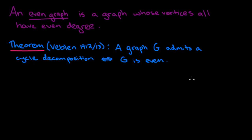We're going to talk more about cycle decompositions in this video. To start off, we give a definition: a graph whose vertices all have even degree is called an even graph. This makes the statement of the theorems a little bit easier. We'll prove this theorem: a graph G admits a cycle decomposition if and only if G is even — that is, if and only if all vertices of the graph have even degree.